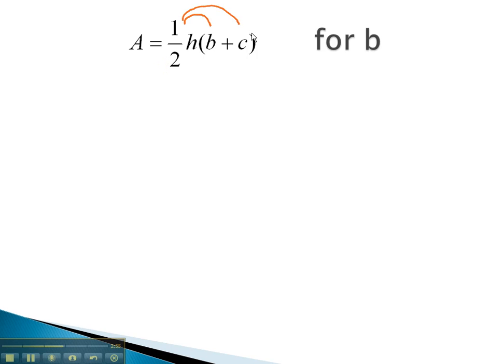We'll distribute the 1 half h onto both terms. We now have A equals 1 half hb plus 1 half hc.